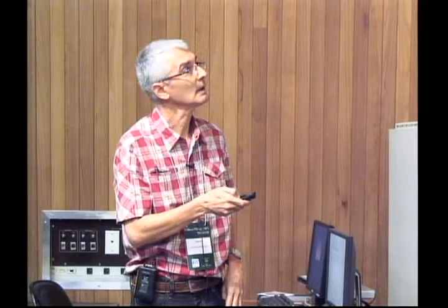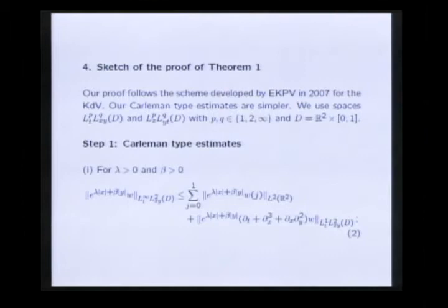The first step in the proof is to establish two Carleman type estimates. The first estimate expresses certain continuity properties of the inverse operator of the linear part of the ZK equation. This estimate says that this weighted L infinity T L2 XY norm in the band D of W is bounded by this L2 norm of W at the times T equals 0 and T equals 1 plus this weighted L1 T L2 XY norm in the band D of the linear part of the ZK applied to W.